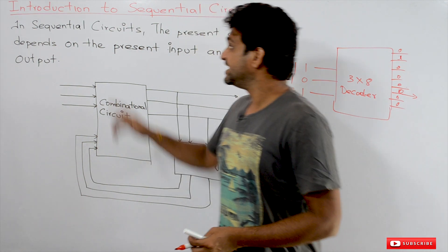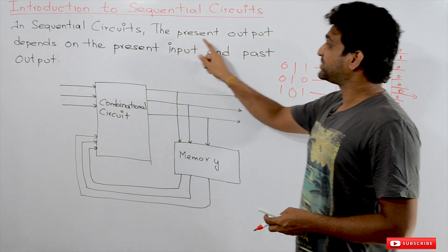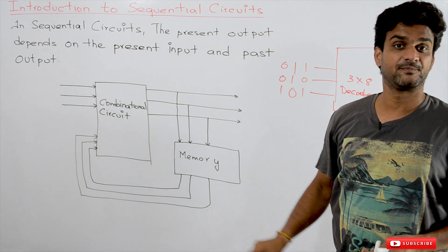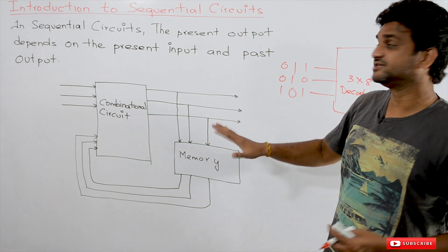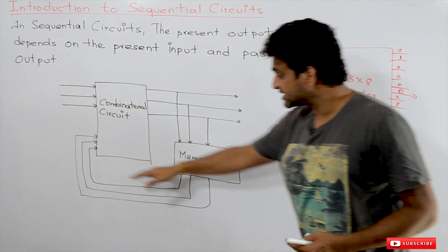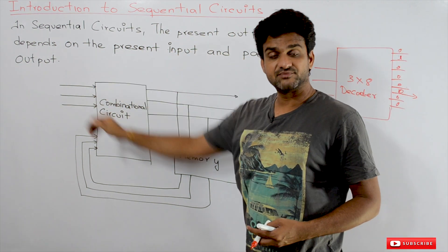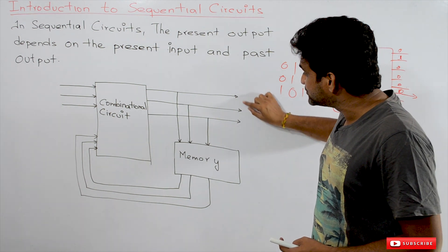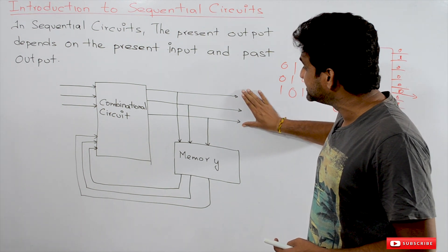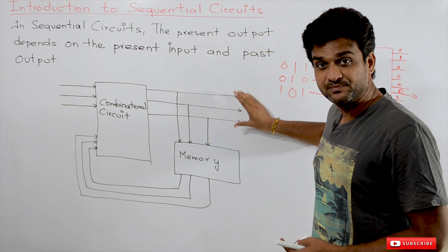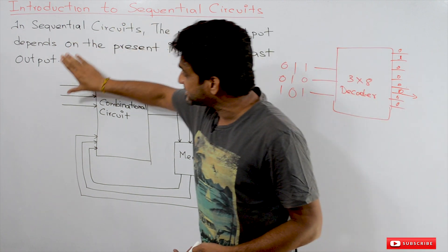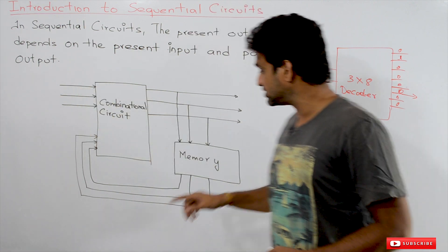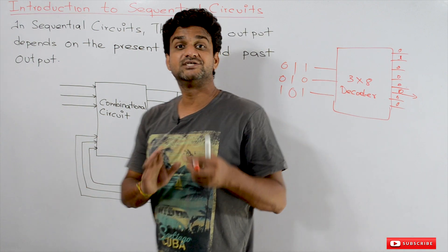In a sequential circuit, the present output depends on the present input AND the past output. This is the block diagram of a sequential circuit. The output we obtain at this point in time is dependent upon both the present input and also the past output.